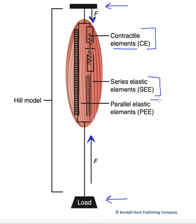Finally, the third element of our Hill model is the parallel elastic element. These are also stretchy elements, but think of them as a rigid spring that both resists stretching and compression, so it acts a bit as a buffer. It's comprised of the cell membrane and some of the connective tissues — things that are not pulled on directly by the contractile elements. In other words, they are not in series with the contractile elements; rather, they are parallel to them.